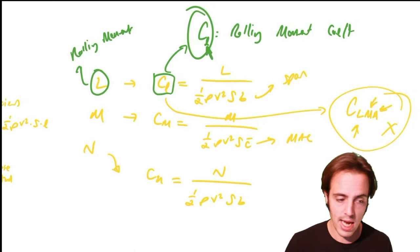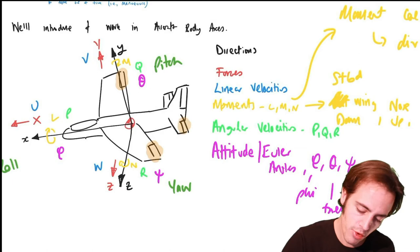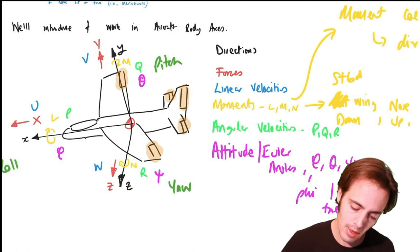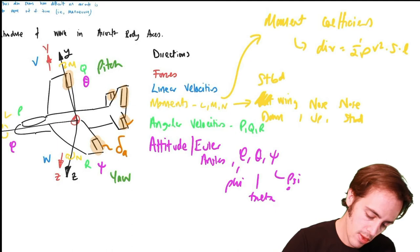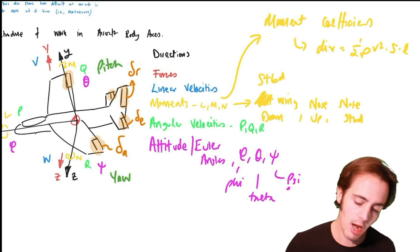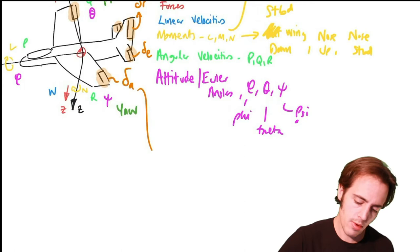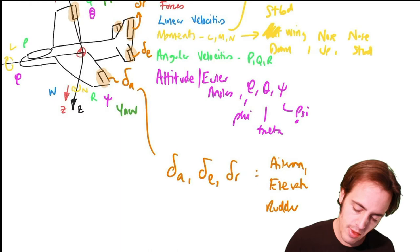Let's also draw our control surfaces. We've got the ailerons, which provide roll control; the elevator, which provides pitch control; and the rudder. Their deflections are: small delta subscript a for ailerons, small delta subscript e for the elevator, and small delta subscript r for the rudder — aileron, elevator, and rudder deflections.